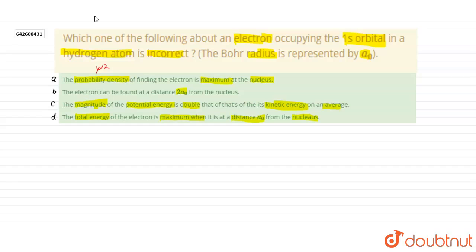Of finding the electron is maximum at the nucleus. Guys, probability density, or if we define an orbital, if we define an orbital, what is definition of orbital?